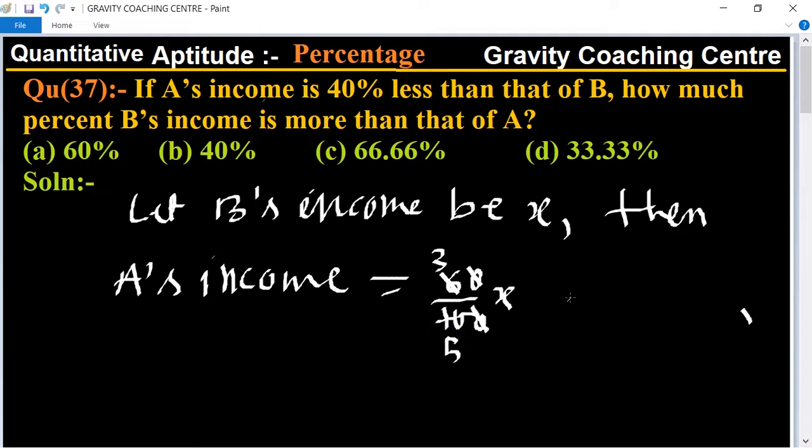And X minus 3X/5 equals (5X minus 3X)/5, which equals 2X/5.